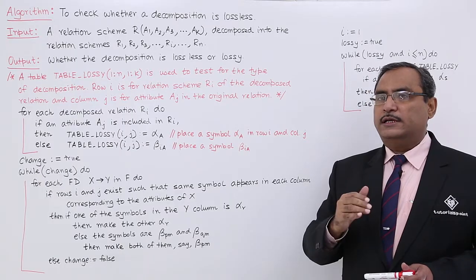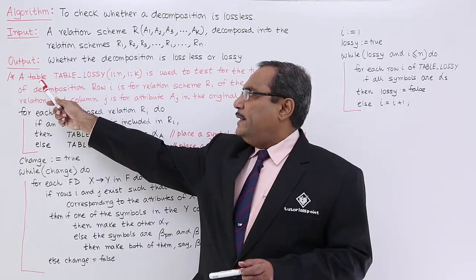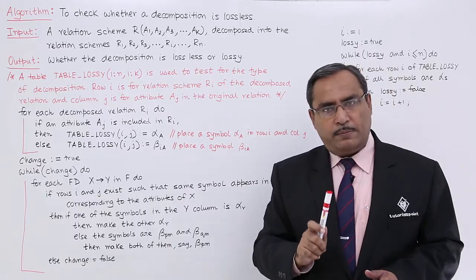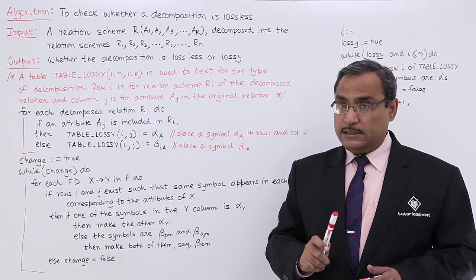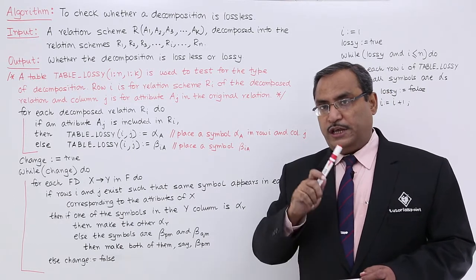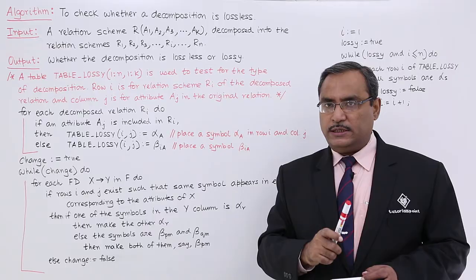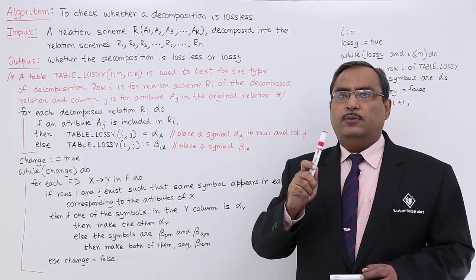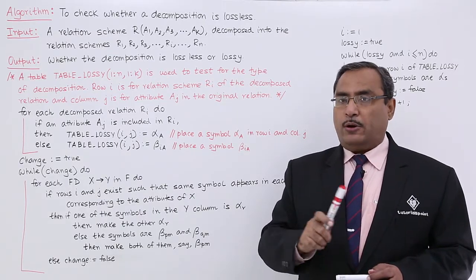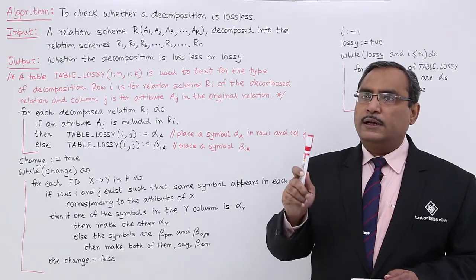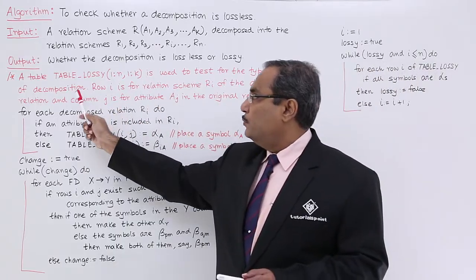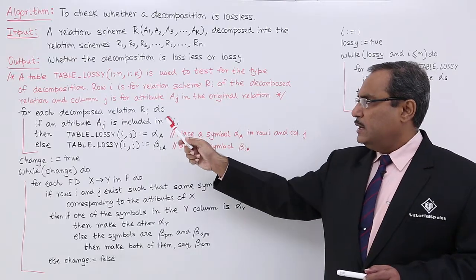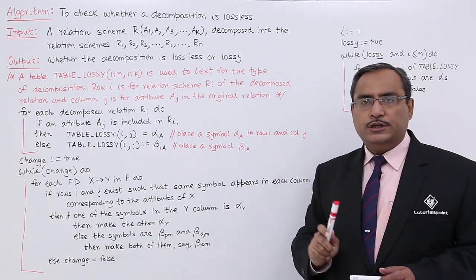We shall form a table called 'table lossy' having N number of rows and K number of columns — 1 to N rows, meaning the number of rows equals the number of decomposed relations, and K number of columns. Row i is for relation scheme Ri of the decomposed relation and column j is for attribute Aj in the original relation.